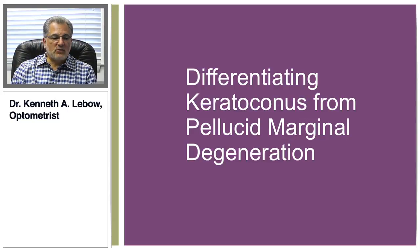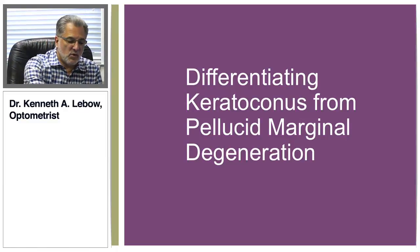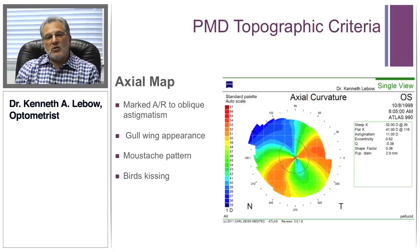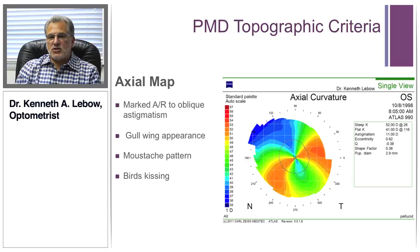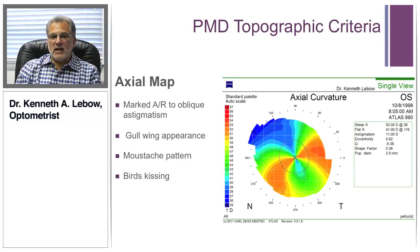Another confounding issue is pellucid's marginal degeneration. Keratoconus is a mid-central thinning disorder, while pellucid's marginal degeneration is a peripheral corneal thinning disorder. While they have similar patterns, there are some unique differentiations between them that I'd like to share.